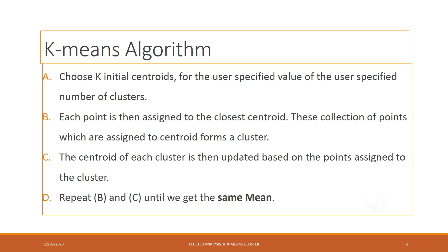K-Mean Algorithm: Initially, the K-value is decided by the researcher — that is, the user-specified number of clusters to be formed. That is step number one. Step two: each point is then assigned to the closest centroid, and this collection of points forms a cluster. Step three: the centroid of each cluster is then updated based on the points assigned to it, forming a new cluster. This procedure is repeated until the cluster differences equal zero and the cluster means stabilize.